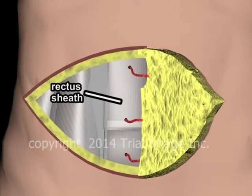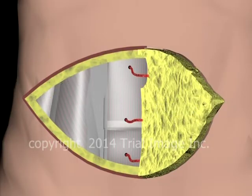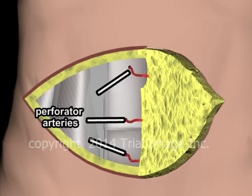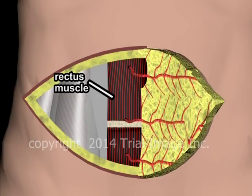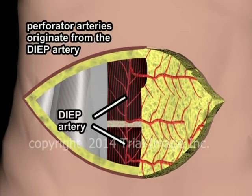Let's take a look at the anatomy. Here we see the rectus sheath again, surrounding the rectus muscle. And here are a set of arteries known as perforator arteries, which actually supply the blood to the fat and skin layer of the skin island. The perforator arteries are so named because they arise from the deep inferior epigastric arteries and then perforate the rectus muscles to reach the fatty layer of the skin island.